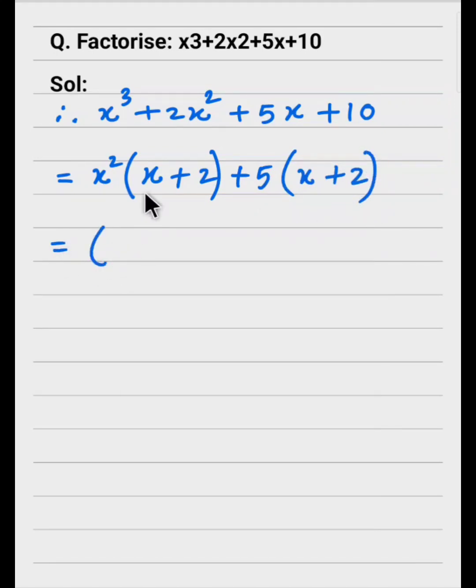What do we write? x plus 2 is common. So, (x+2) times (x²+5). That is the answer.